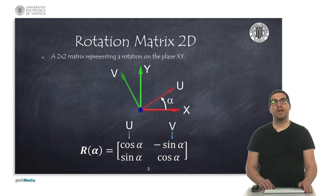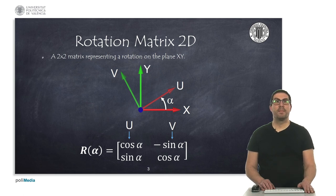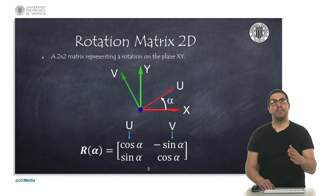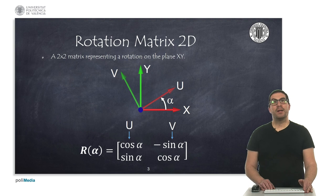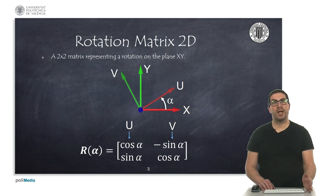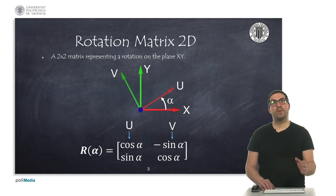A rotation matrix represents a rotation of a reference frame contained on an xy plane. The first column represents the coordinates of the u vector. The u vector is the vector aligned initially with the x-axis, but rotated. The second vector is the vector v, which corresponds to the y vector that has been rotated with the corresponding angle. Both rotations are referred with respect to the origin of the reference system.